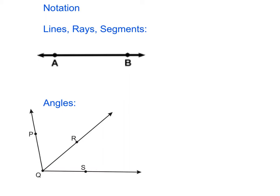The first way we can label it is if it was line AB, going through the two points. If it's a line, we're going to put a line on the top with arrows on both ends, signifying that it's continuous in both directions.